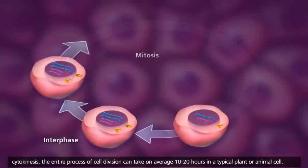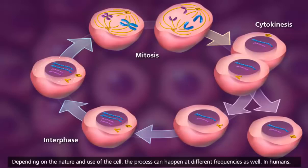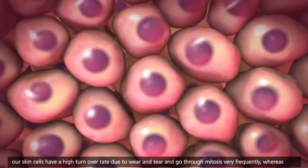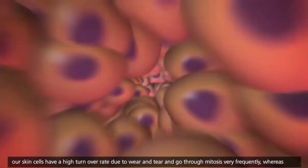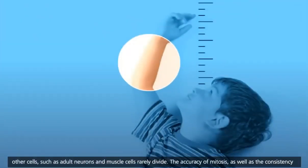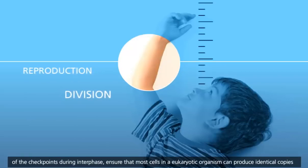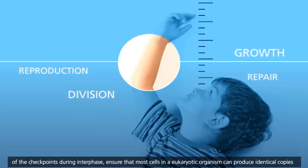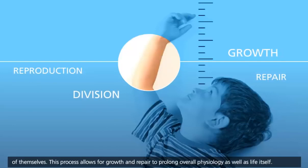From interphase to cytokinesis, the entire process of cell division can take on average 10 to 20 hours in a typical plant or animal cell. Depending on the nature and use of the cell, the process can happen at different frequencies as well. In humans, our skin cells have a high turnover rate due to wear and tear and go through mitosis very frequently, whereas other cells, such as adult neurons and muscle cells, rarely divide. The accuracy of mitosis, as well as the consistency of the checkpoints during interphase, ensure that most cells in a eukaryotic organism can produce identical copies of themselves. This process allows for growth and repair to prolong overall physiology, as well as life itself.